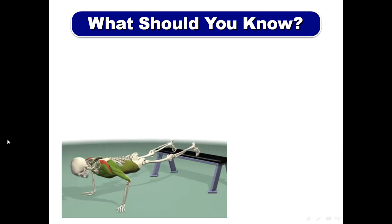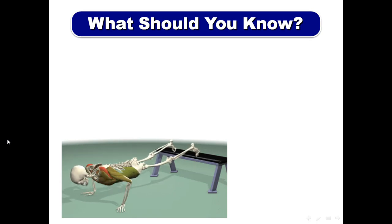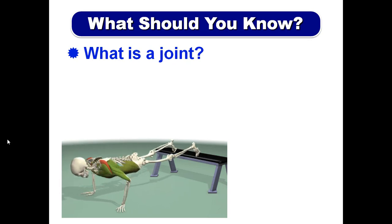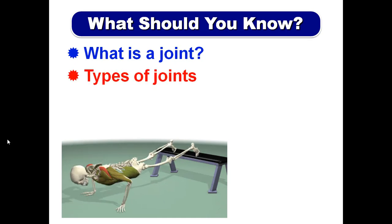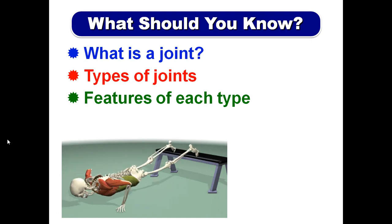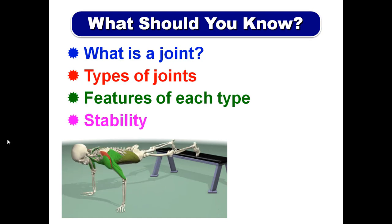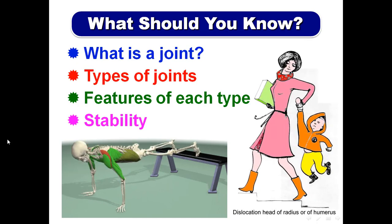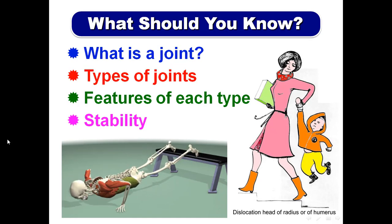Good morning. Today I will talk about joints. What should you know about joints? Number one: what is a joint, what is the definition of a joint? What are the types of joints, what are the features of each type, and what are the factors which affect the stability of the joint — is this joint stable or unstable, is it liable to dislocation?